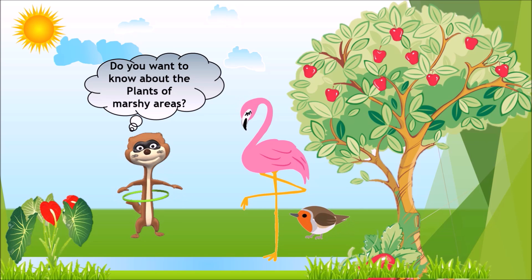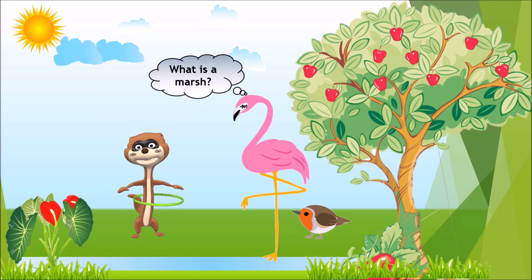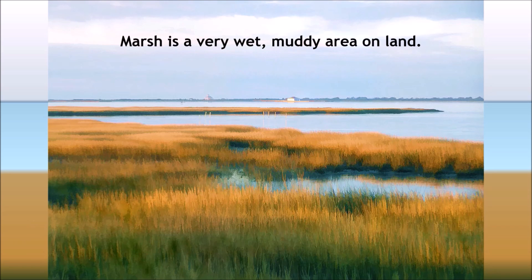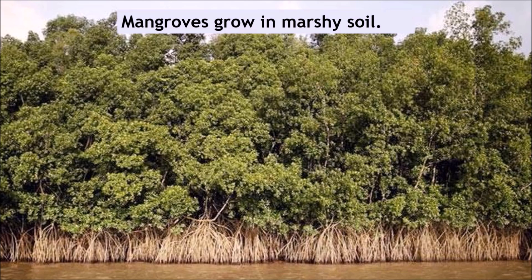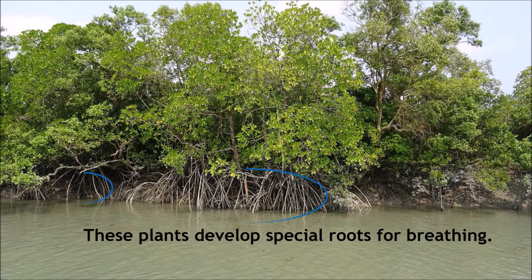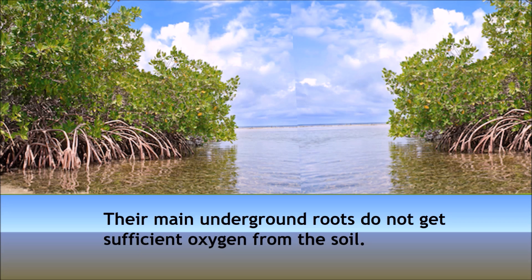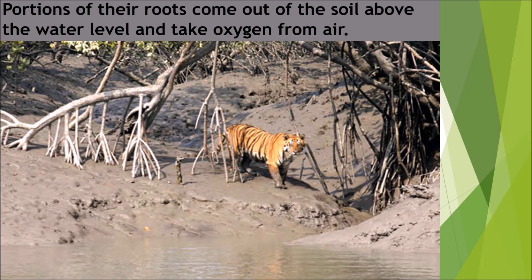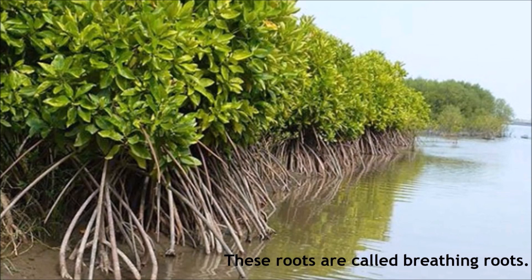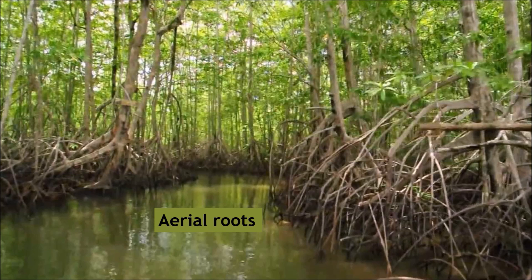Do you want to know about the plants of marshy areas? What is a marsh? A marsh is a very wet, muddy area on land. Mangroves grow in marshy soil. These plants develop special roots for breathing, as their main underground roots do not get sufficient oxygen from the soil. Portions of their roots come out of the soil above the water level and take oxygen from air. These roots are called breathing roots, and they are also called aerial roots.